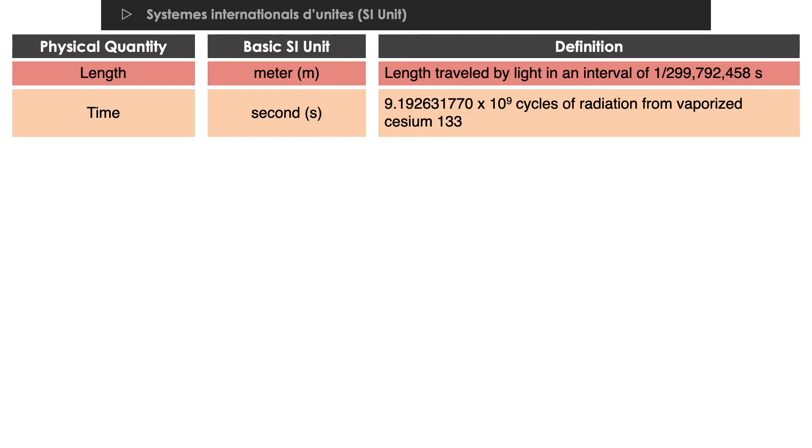Time is the quantitative measure of the flow of events. The SI basic unit of time is second. One second is defined as the time required for 9.1926 times 10 raised to 9 cycles of radiation from vaporized cesium-133.